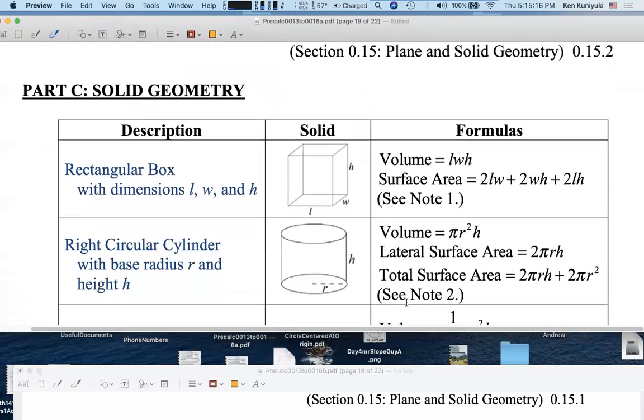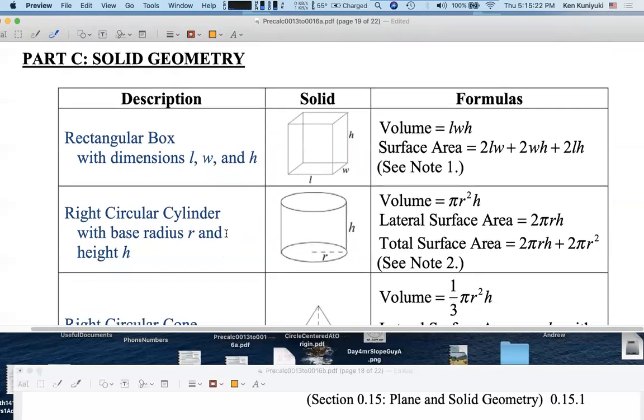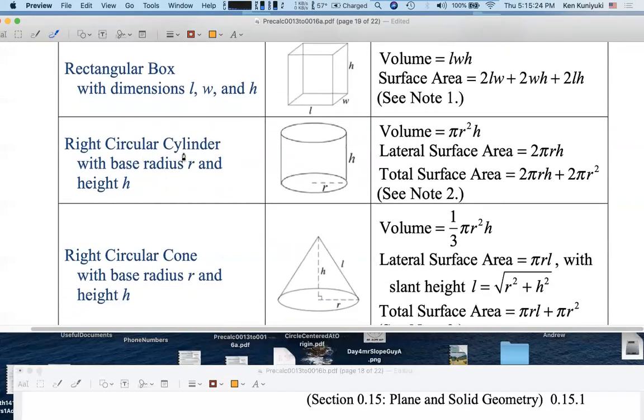Three-dimensional solid geometry. Know the formulas for the volume and surface area of a rectangular box. Right circular cylinders - right means that it's not tilted, circular means you have circular cross sections, with base radius r and height h.